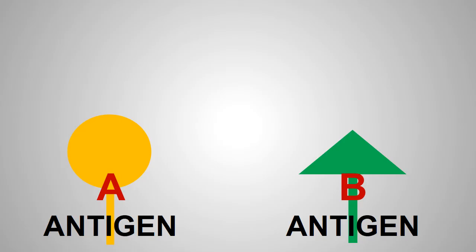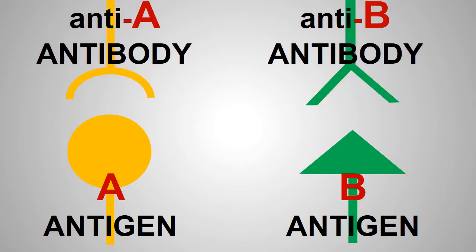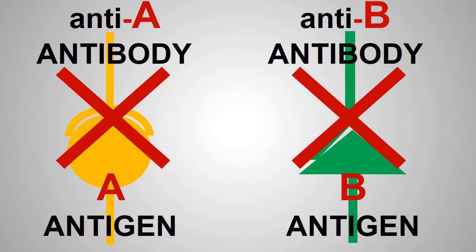The body usually produces antibodies against these antigens if they are not found on the person's red blood cells. As a rule, the same antigens and antibodies must never meet in a person's blood.